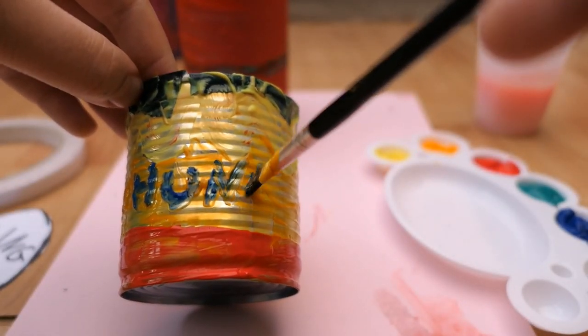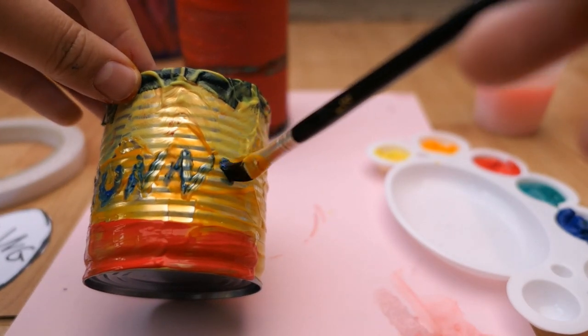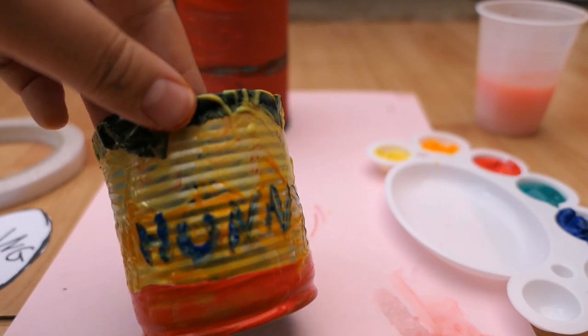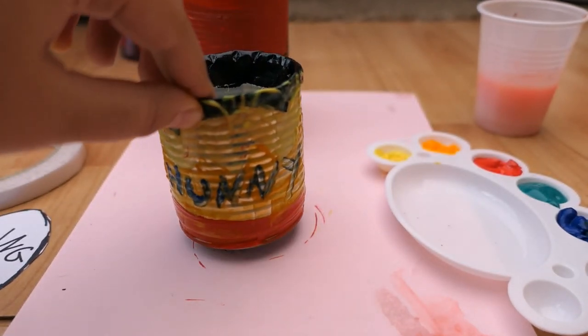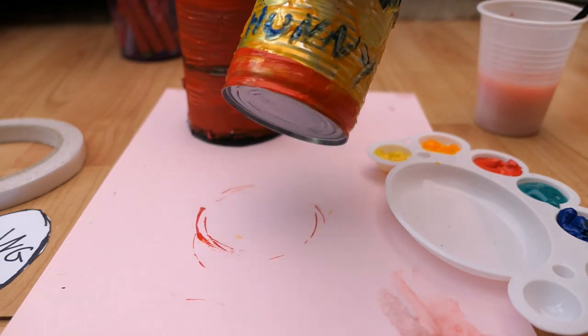So Pooh Bear spells it a bit weirdly. There we go. There's the honey pot for Pooh Bear's honey. And you can put a lovely plant in there once it's dry. Some soil and seeds. Let it grow. We'd love to see your designs for your tin cans so please send them in.